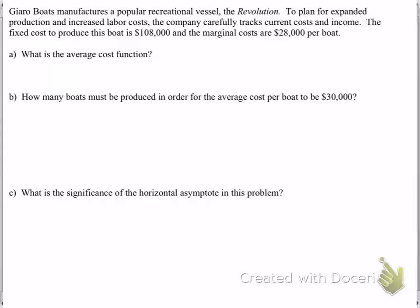Part A is asking us to create an average cost function. First remember it's important that we define our variables. In this case we're looking at x being the number of boats produced.